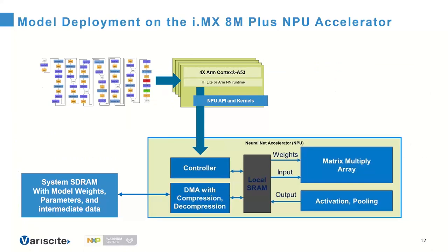To deploy a model on the 8M Plus, model parsing and command generation occur on the A cores, which use an API to transfer functions to the neural processing unit through its controller. These functions include activation functions, dense layers, matrix multiplication, normalization, reshaping, and RNN. The NPU can access SDRAM via DMA to retrieve model weights, parameters, and intermediate data. NXP has been developing tools and references to enable machine learning across the device range, launching together with the processor in Q1 2021.